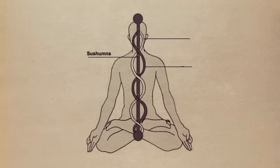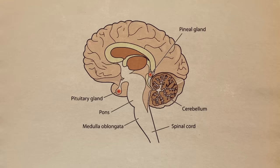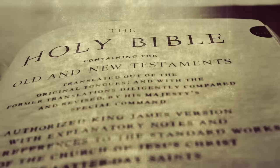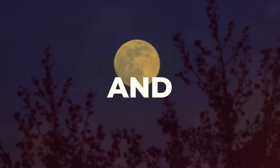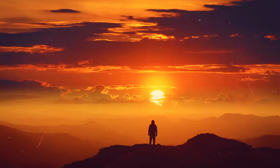In some traditions, the two energy channels running along the spine are named Ida and Pingala. These channels lead to the pineal and pituitary glands. In the Bible, this connection is described as a land abundant with milk (pineal gland) and honey (pituitary gland), representing the sun and moon respectively.